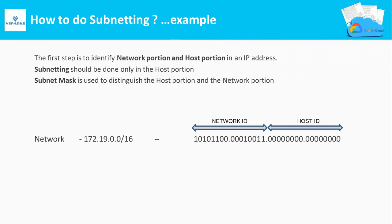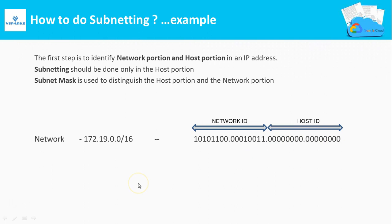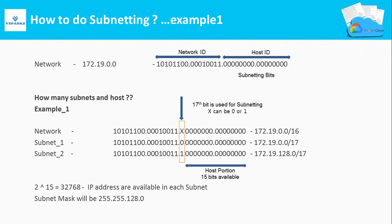How to do subnetting: first, identify the network ID portion from the IP address, usually identified by the classes and the subnet mask. In the last diagram the network was 172.19.0.0/16 — the /16 is the CIDR number telling us the first 16 bits are reserved for the network portion and the next 16 bits are the host portion. Subnetting should be done only in the host portion; we cannot divide the network ID portion.